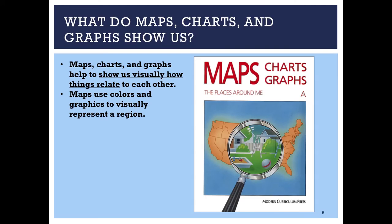Maps use colors and graphics to visually represent a region, an area, a country, a continent, or even the entire planet. They're pretty important because by looking at them we can make certain judgments or inferences as to what an area is like on the surface of the planet.